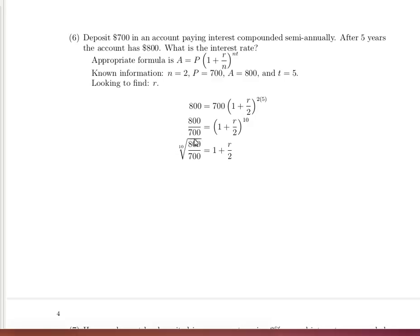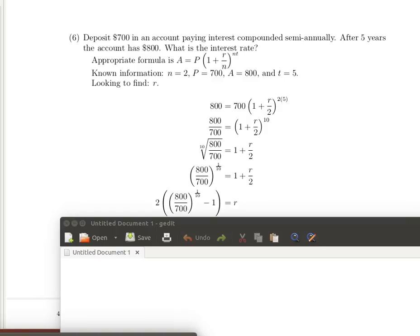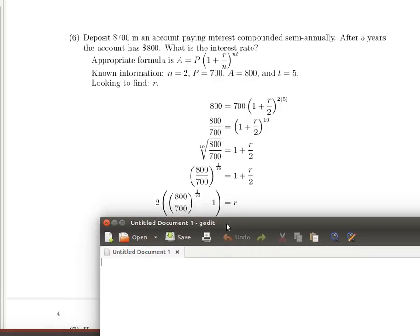Now we'll need to undo this raising to the tenth power. Your calculator might not have a tenth root on it, but it does have an exponentiation function. So we'll change this to 800 over 700 raised to the one-tenth power. Then subtract 1 from both sides and multiply both sides by 2. It's a little tricky calculator problem, but that's all we need to do.